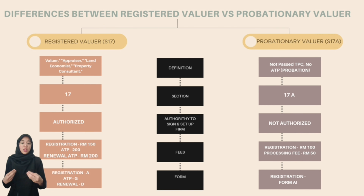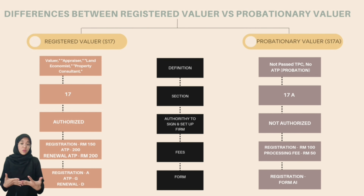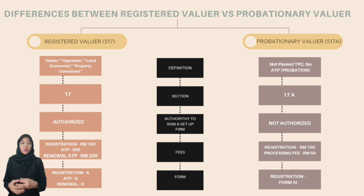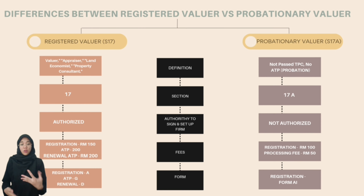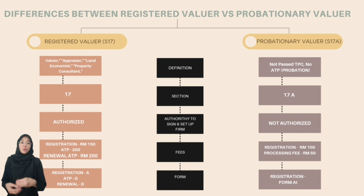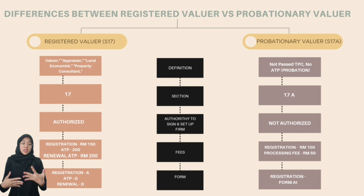Lastly, there are certain forms that both registered valuers and probationary valuers must submit, but they differ. For a registered valuer, they must submit a registration form using form A; for obtaining the Authority to Practice, form G is used; and for the annual renewal of the Authority to Practice, form D is required. For a probationary valuer, the only required form is the registration form using form A1, according to section 18 of rule 70 of the schedule.